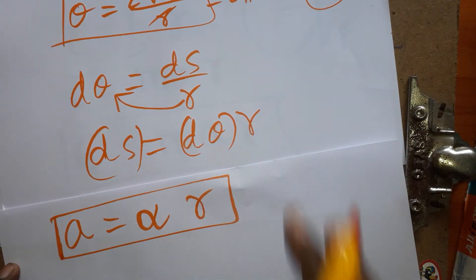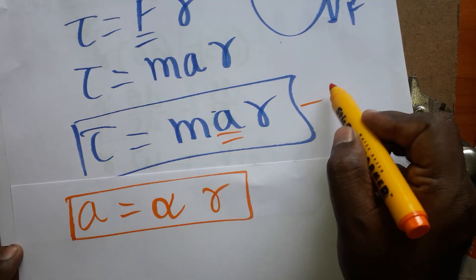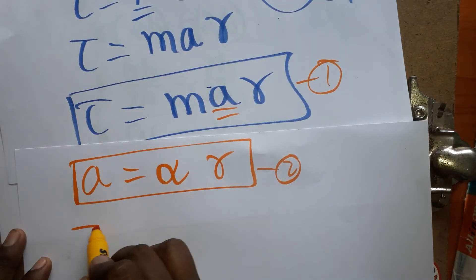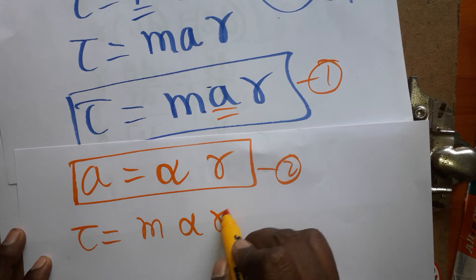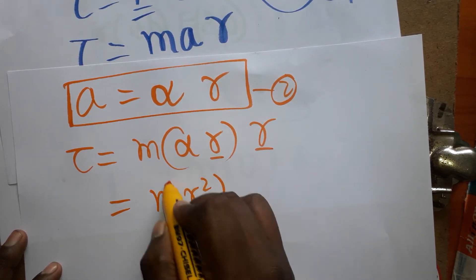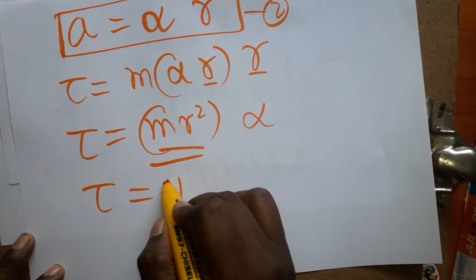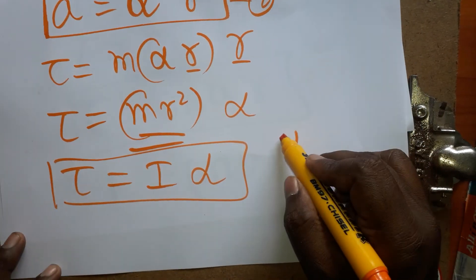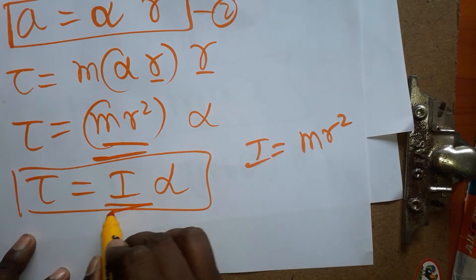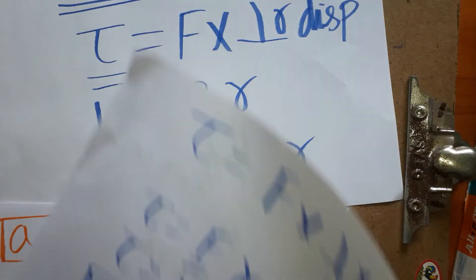We already have torque equals mar as equation one. Substituting a equals alpha times r into this gives torque equals m times alpha r times r, which equals m r squared times alpha. Since m r squared is the moment of inertia I, torque equals I times alpha.